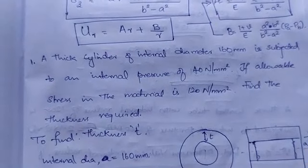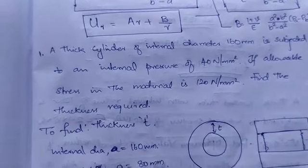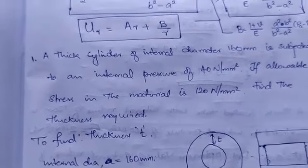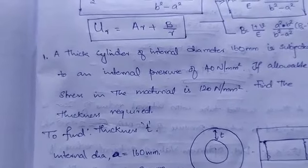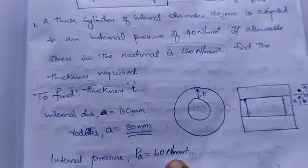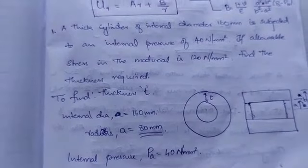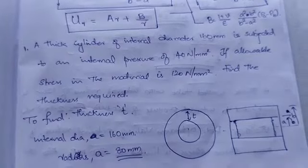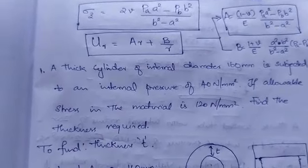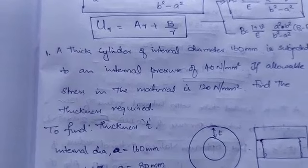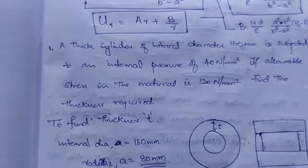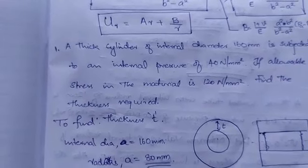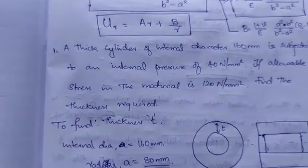The internal diameter is 160 mm, so the internal radius a = 80 mm. There is no external pressure given, so only internal pressure p_a = 40 N/mm² is given. The allowable stress in the material is the maximum extent to which that cylinder can retain its original shape — that is the maximum stress.